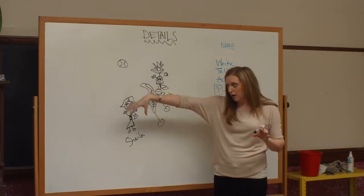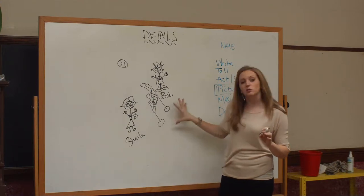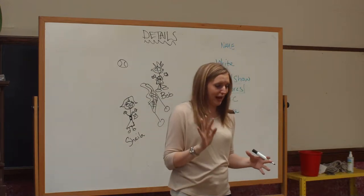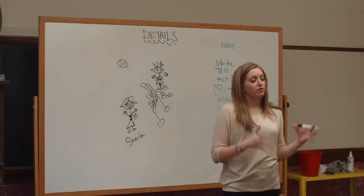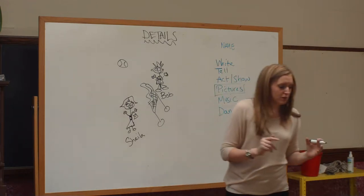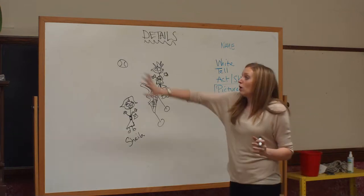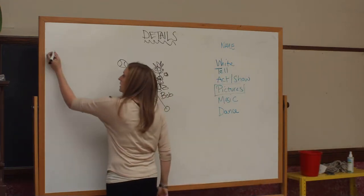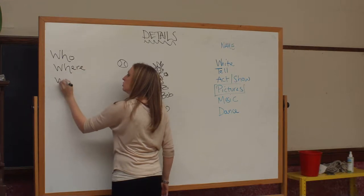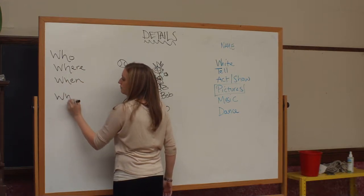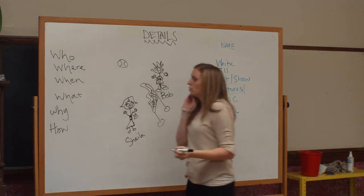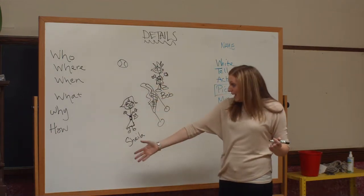Now it's time to move into the who, what, when, where, why, and how. We've got some details in this picture, but we still don't know the story. To get the story, we're going to use the five W's and the H of writing. You want to write them in a specific order on the board to set up beginning, middle, and end: who, where, when, what, why, and how.